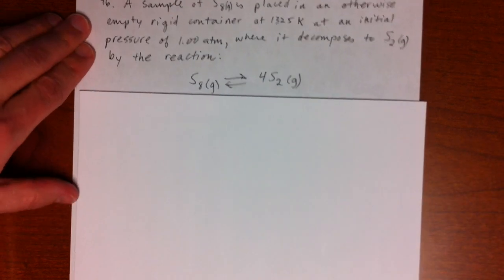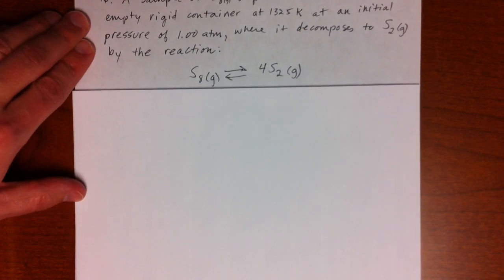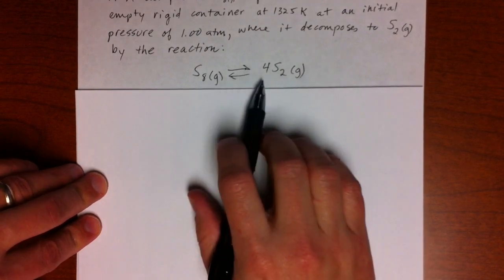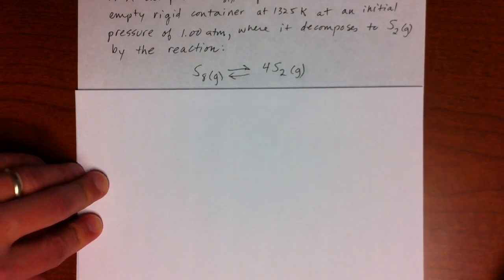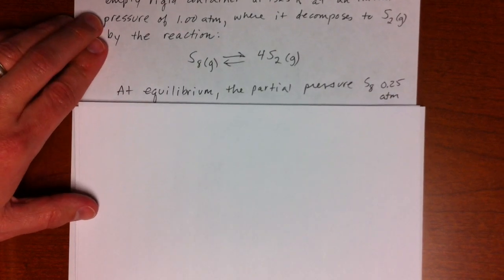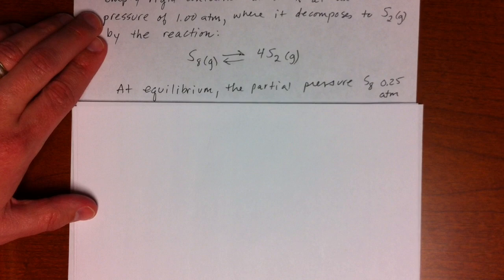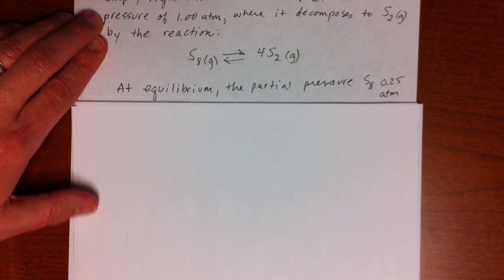And that is S8 going to 4S2. At equilibrium, the partial pressure of S8 is 0.25 atmospheres. Calculate Kp for the reaction.